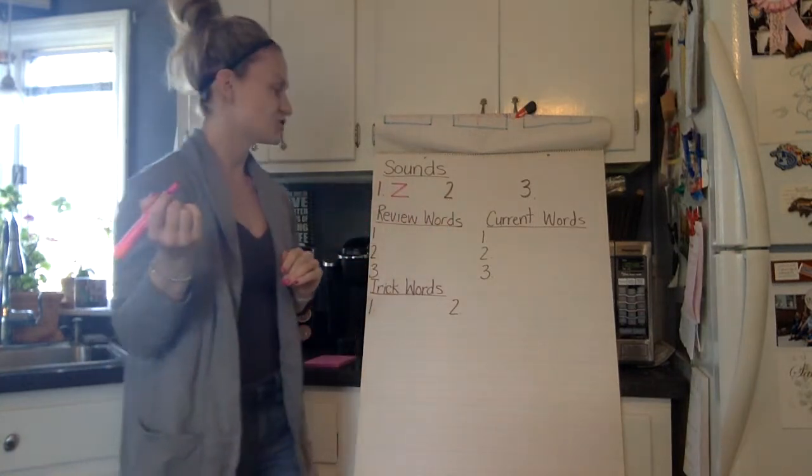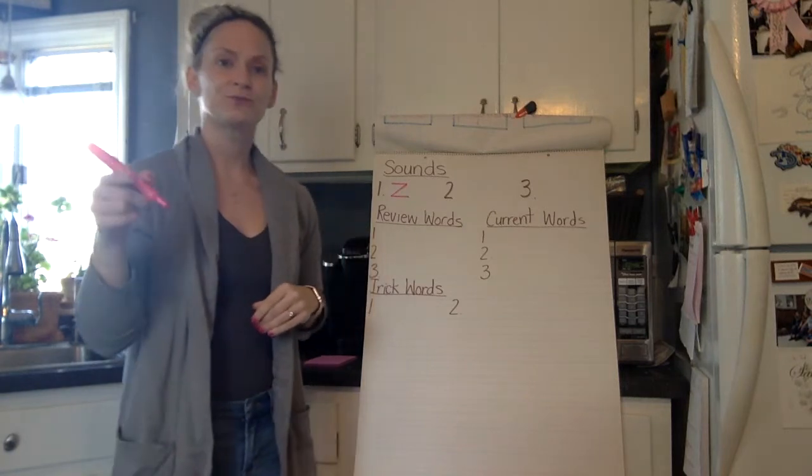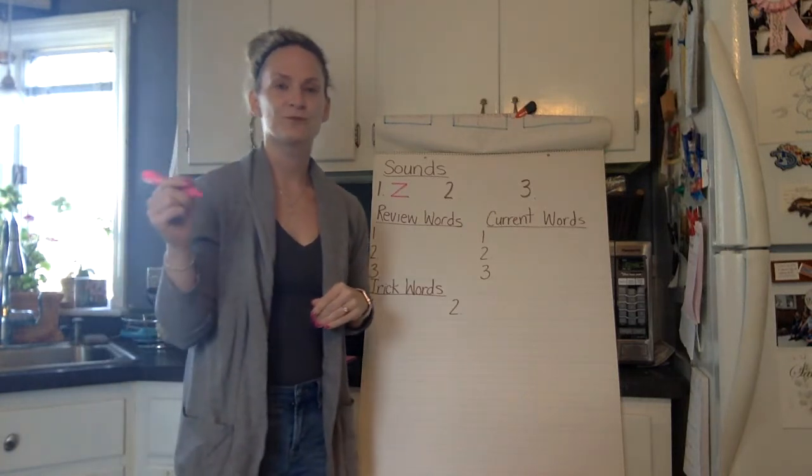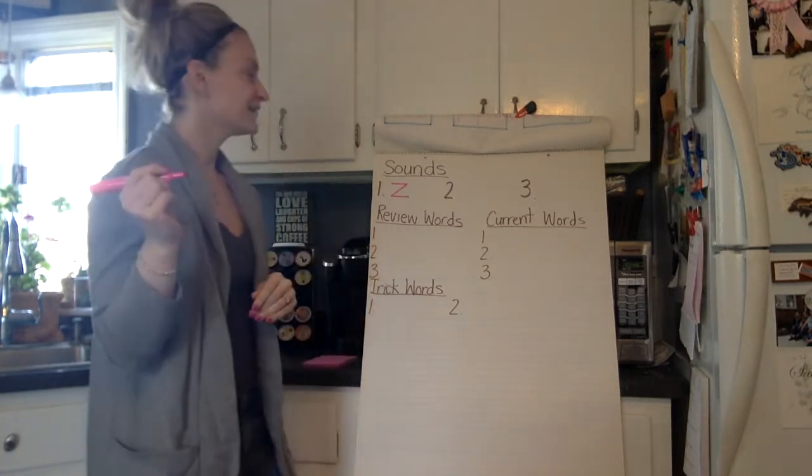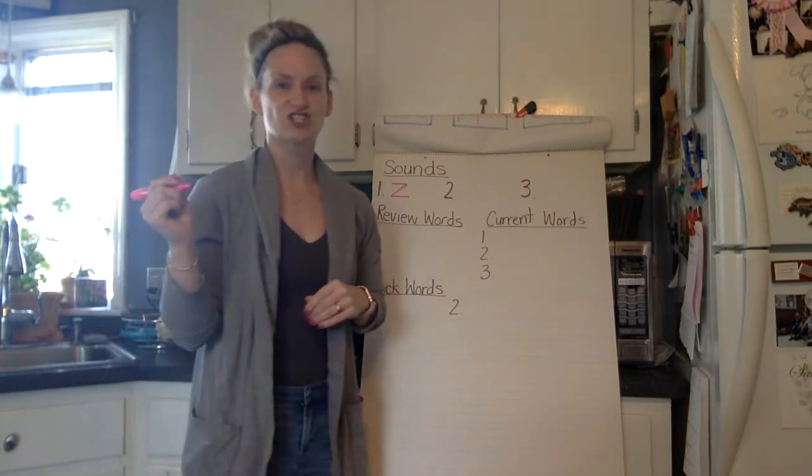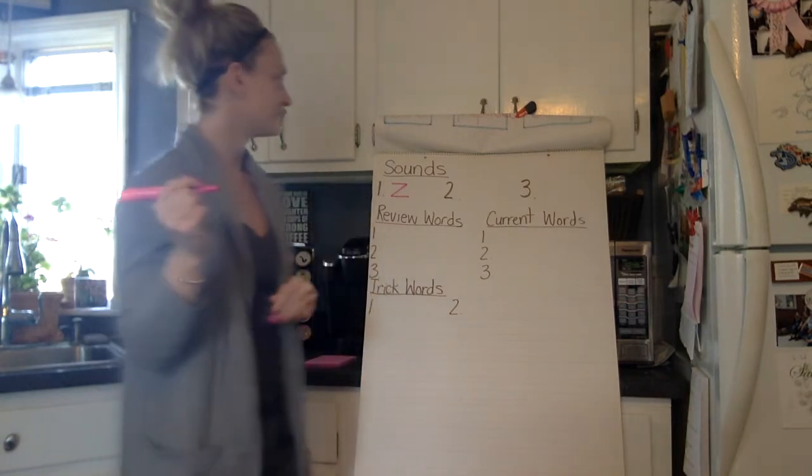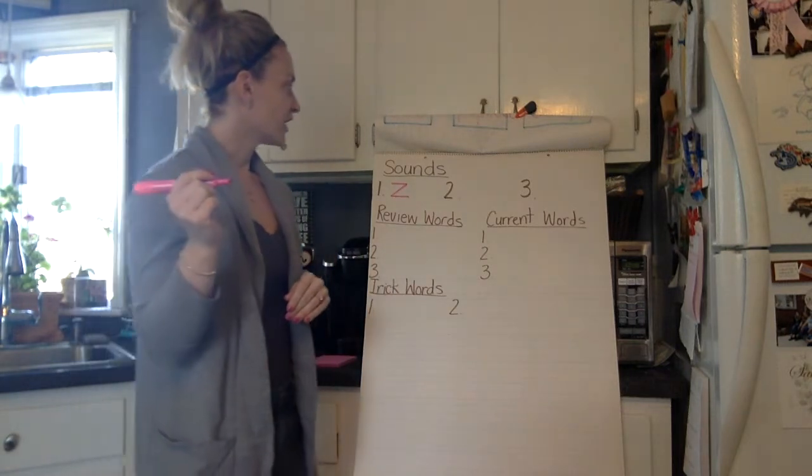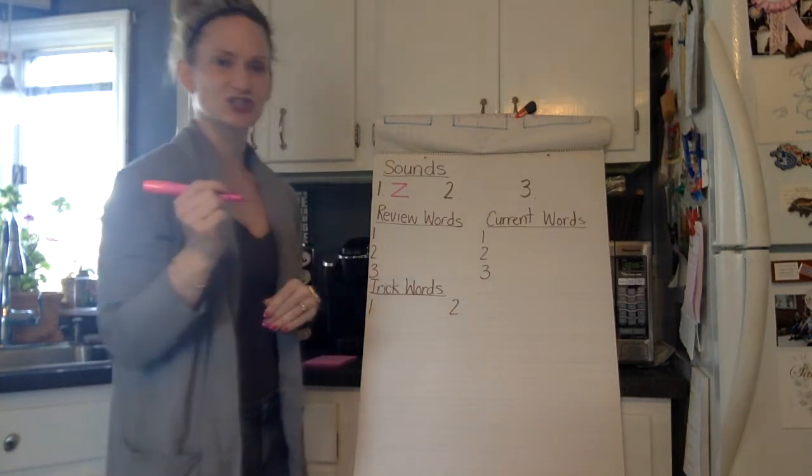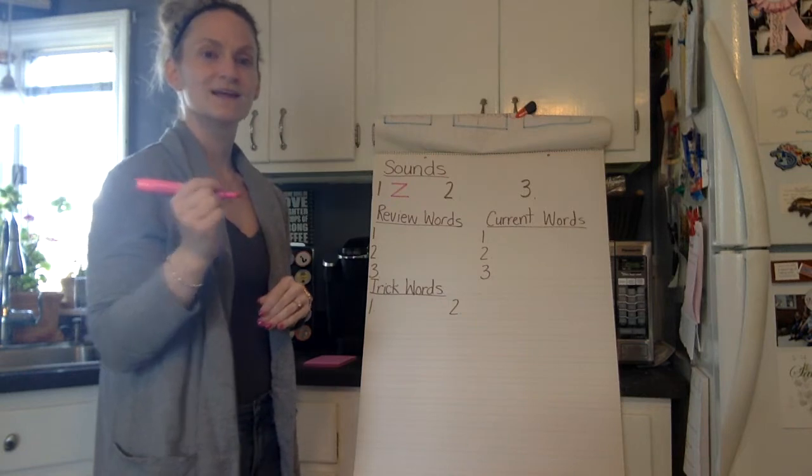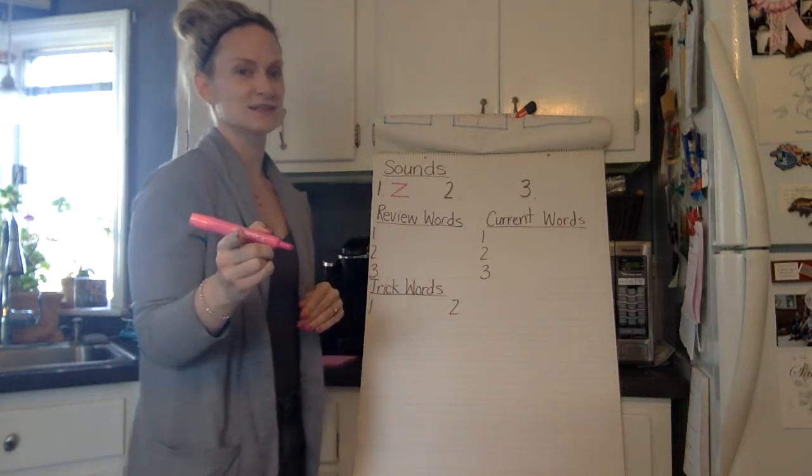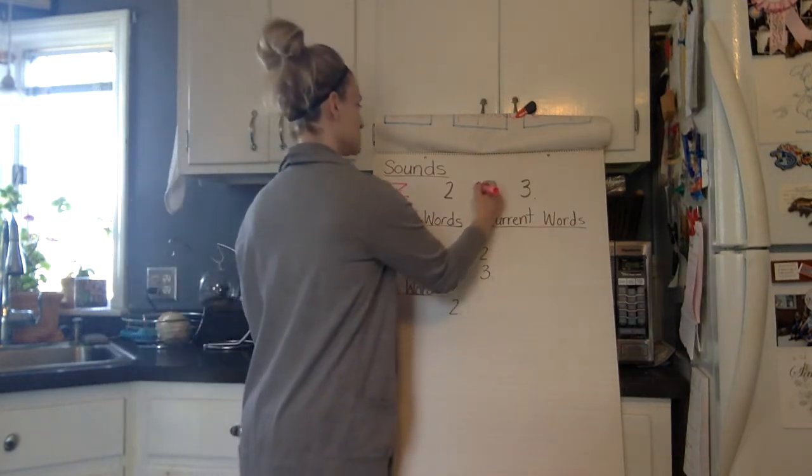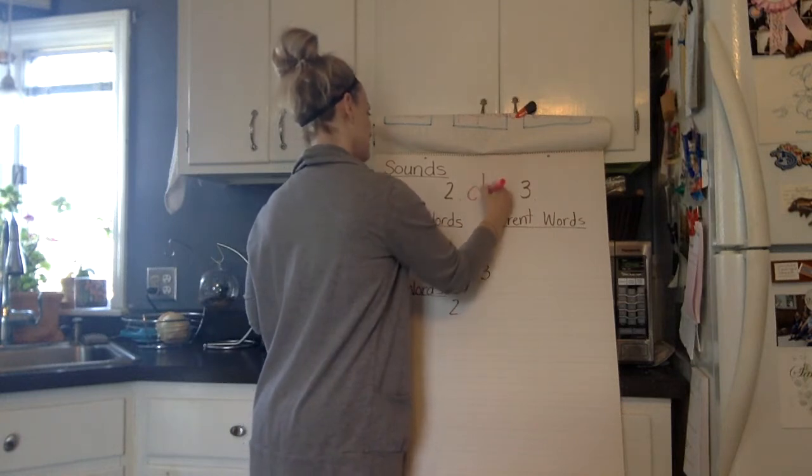Okay, number two, ch, ch. Write the letters that make the sound ch next to number two. All right, Charlie, what letters make the sound ch? That is correct. I hope Tyler didn't tell you that answer. All right, it is ch. Nice job. The ch digraph.